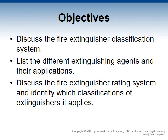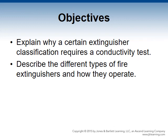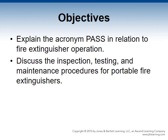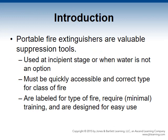Objectives: Discuss the fire extinguisher classification system. List the different extinguishing agents and their applications. Discuss the fire extinguisher rating system and identify which classifications of extinguishers it applies. Explain why a certain extinguisher classification requires a conductivity test. Describe the different types of fire extinguishers and how they operate. Explain the acronym PASS in relation to fire extinguisher operations. Discuss the inspection, testing, and maintenance procedures for portable fire extinguishers.